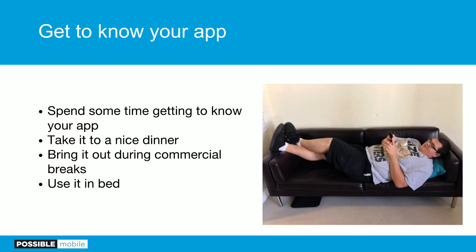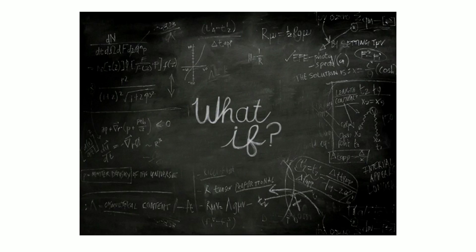Get to know your app. Take it out to dinner. Bring it out during commercial breaks. Use it in the morning when you wake up — most Americans now use their phones before they get out of bed, so if your users are going to do it, you can do it too. Don't just think you got the requirements and you'll test A to Z exactly as you wrote it, because the user didn't sit in your requirements meeting. And then think: what if? What if I did this? What if a user did this? What if data was bad? You always want to have that "what if" mentality as QA.